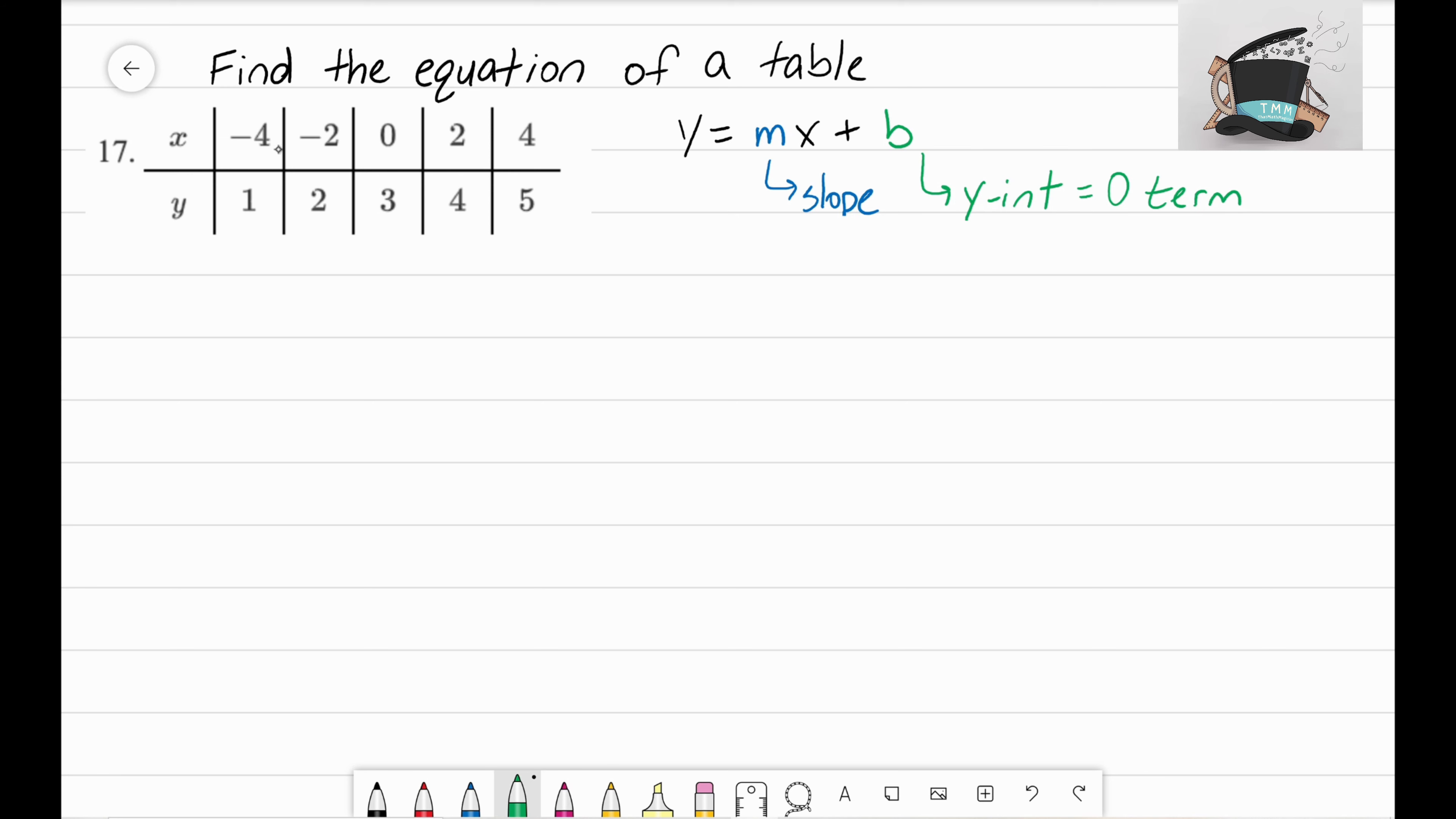Looking at my table here, do I see anywhere where I have a zero term for my input? Right here I see that when x equals zero, y equals three. So this entry in my table already tells me my y-intercept and we don't have to do any work to find it.